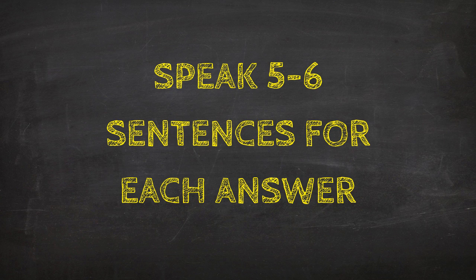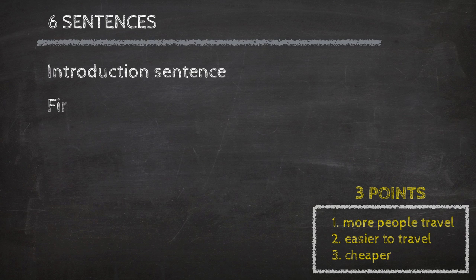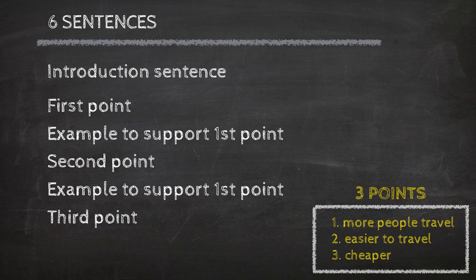Speak 5 to 6 sentences for each answer. Now again, there is not a rule that says you must speak 5 to 6 sentences, but you are expected to have a well thought of answer with examples and points to support your view. So, from my experience, if you aim for 5 or 6 sentences, you will be more likely to achieve a 7 or higher band score. So how do you come up with 5 or 6 sentences for part 3? Well, this could be a good way to structure your answer. Always start with an introduction sentence and use your 3 points that you thought of in your answer. So this kind of structure would be a 6 sentence answer.